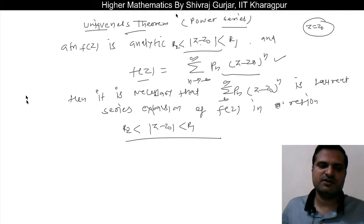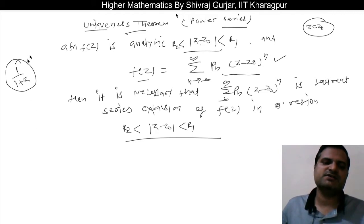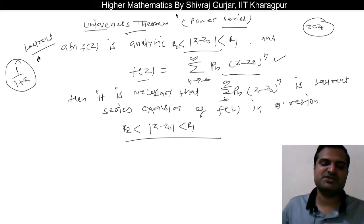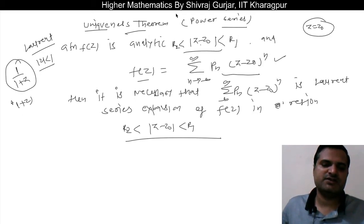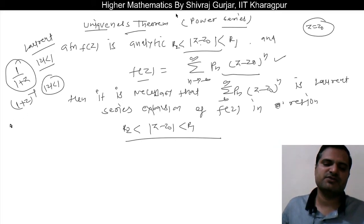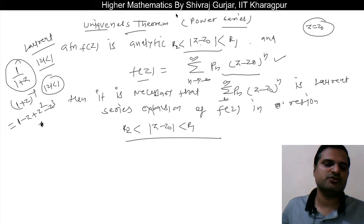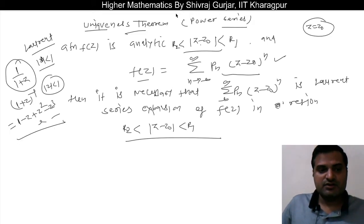For example, suppose we want the Laurent series expansion of f(z) = 1/(1+z) for |z| < 1. We can write it as the inverse of (1+z), and since |z| < 1, the geometric series converges. So we can write: 1 - z + z² - z³ + ... and so on.